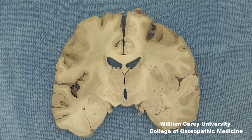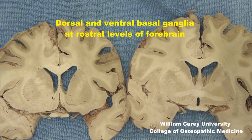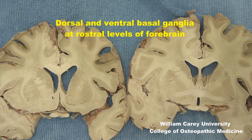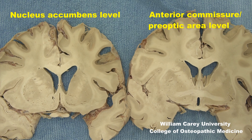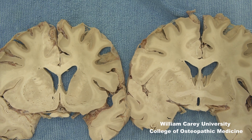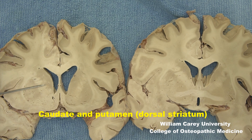The next two slices will take us much more rostral in the forebrain to compare and contrast the dorsal and ventral basal ganglia. Keep in mind that the dorsal and ventral components of basal ganglia are anatomically and functionally distinct. Moving into these rostral slices, we will still first identify the dorsal components before the ventral ones.